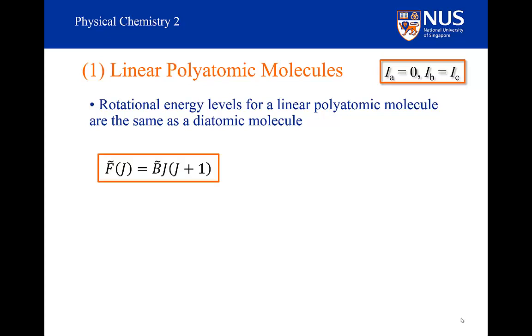This means that the rotational energy levels for a linear polyatomic system is going to be identical to the diatomic molecules. We solved the Schrodinger equation for a linear system. We did this for diatomic, but the answer would have been the same for any linear system. And so, if we ignore centrifugal distortion, then the rotational energy will be given by this familiar expression, F tilde of J equals B tilde times J times J plus 1, where B tilde equals h over 8 pi squared I c. The rotational constant is inversely proportional to the moment of inertia. Now this moment of inertia here is associated with the b and c axes, which of course are the same.